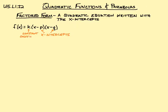Sometimes we also call k a coefficient — either term works. The last piece is f of x, and we always have to remember that this represents our y value. So if we're looking at a coordinate, the y value of that coordinate is what we put in for f of x.